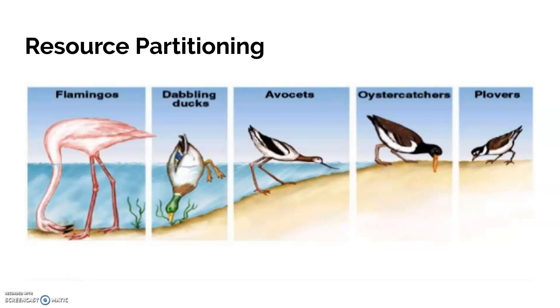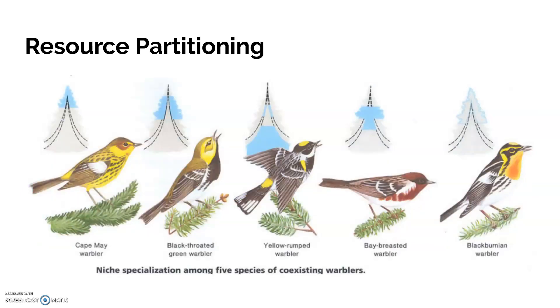They can all eat whatever they need to eat. This is another example showing different types of warblers and how they hang out and feed at different parts of the tree.